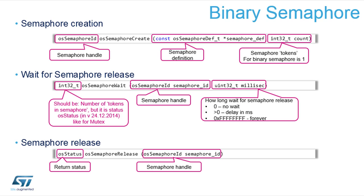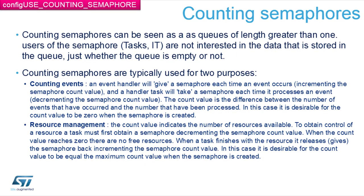Counting semaphores give you more possibilities. When you define a counting semaphore, you define how big the parking lot is — for example, three or five elements. This is the maximum number of cars available. With a counting semaphore, you can release as many as five cars and place them into the semaphore, and take as many as are available, up to a maximum of five at any given time.